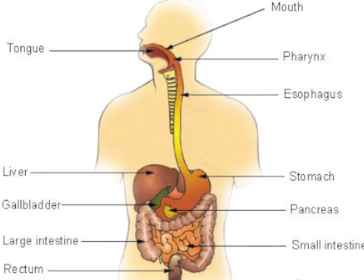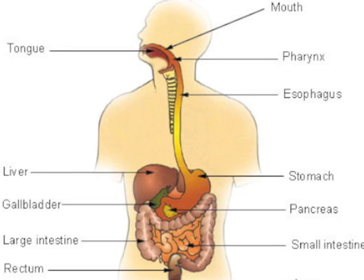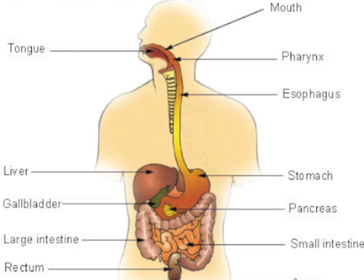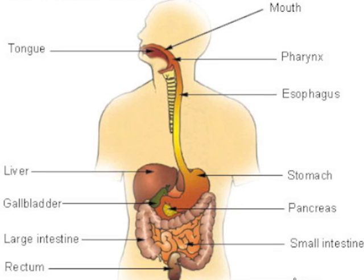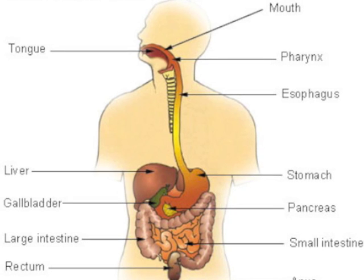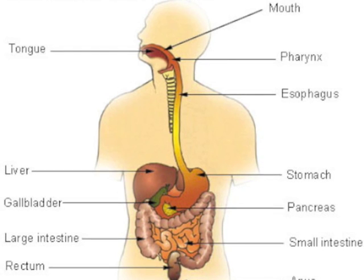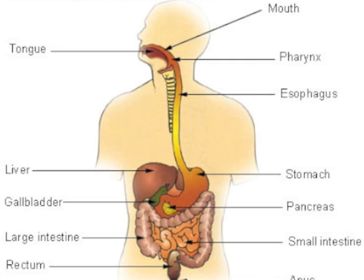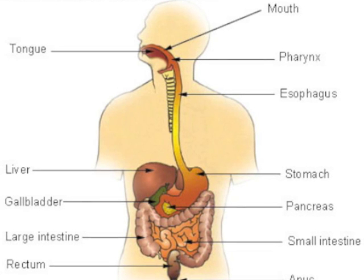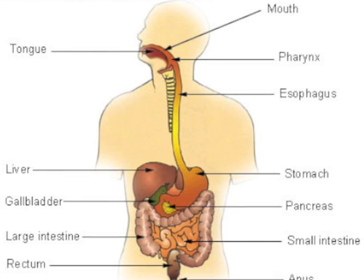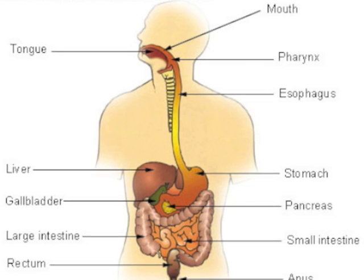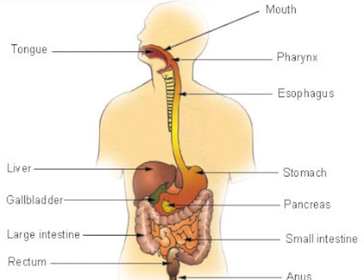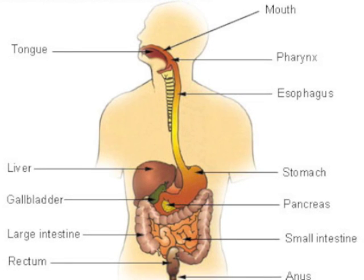The function of the digestive system is to break down food into small molecules to be used as energy. There are many enzymes involved in the digestive process. Each one is secreted from different parts of the digestive system and helps break down carbohydrates, lipids, and proteins.